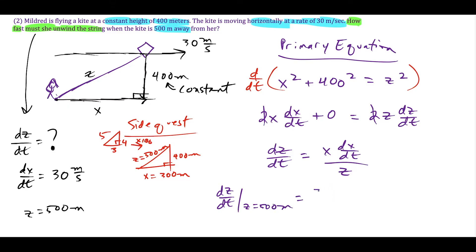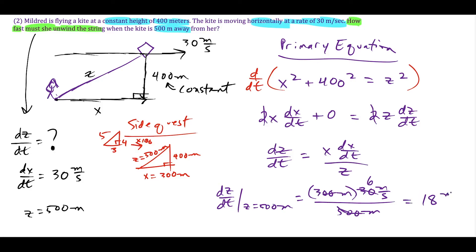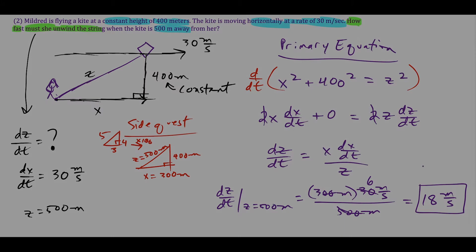Plugging in: dz/dt equals 300 meters times 30 meters per second, divided by 500 meters. The zeros cancel giving 3 over 5, and 30 divided by the remaining 5 is 6, so 3 times 6 equals 18. Therefore, Mildred must unwind the string at a rate of 18 meters per second.